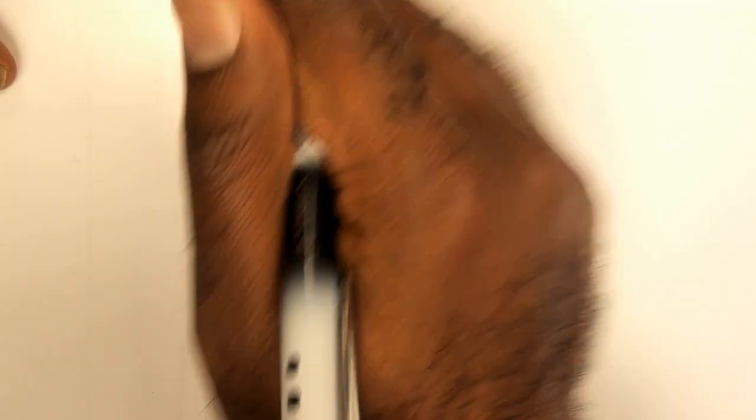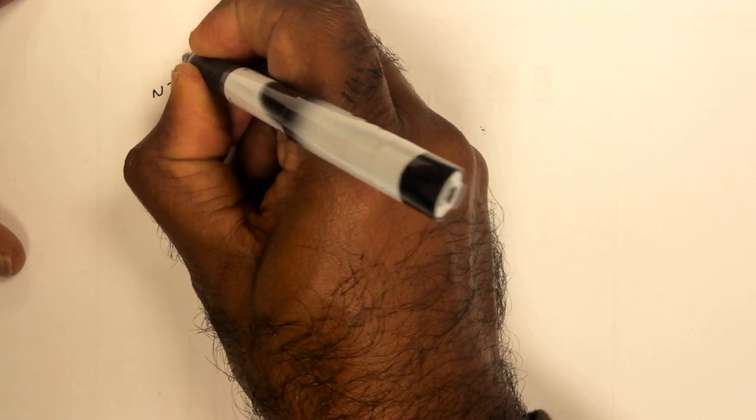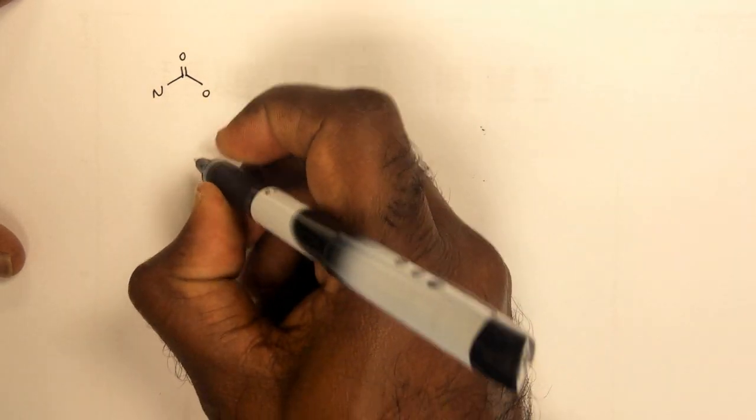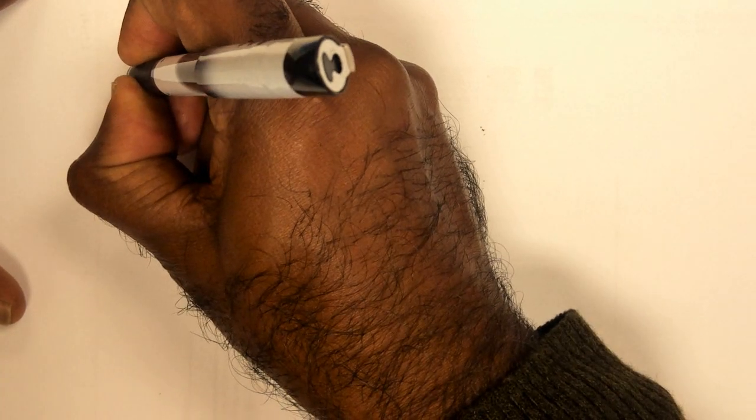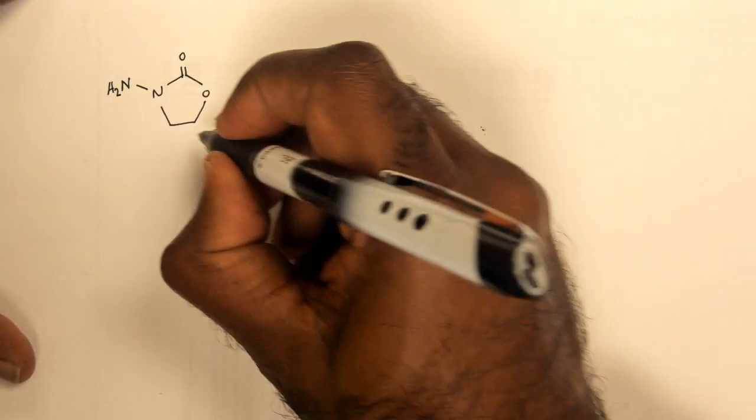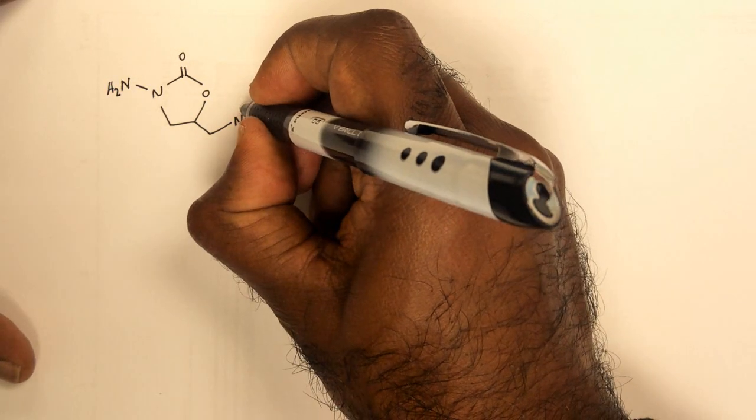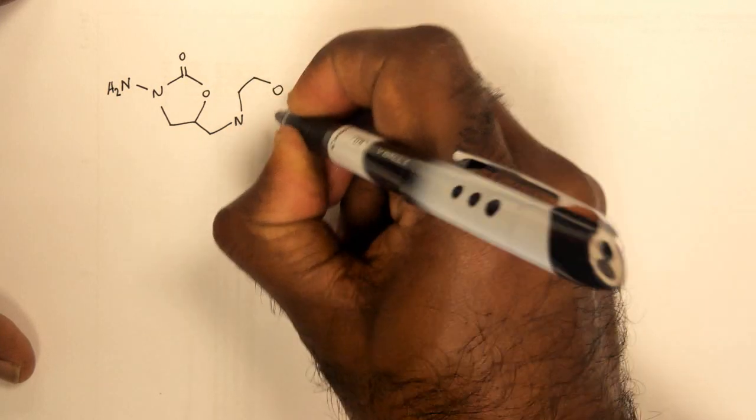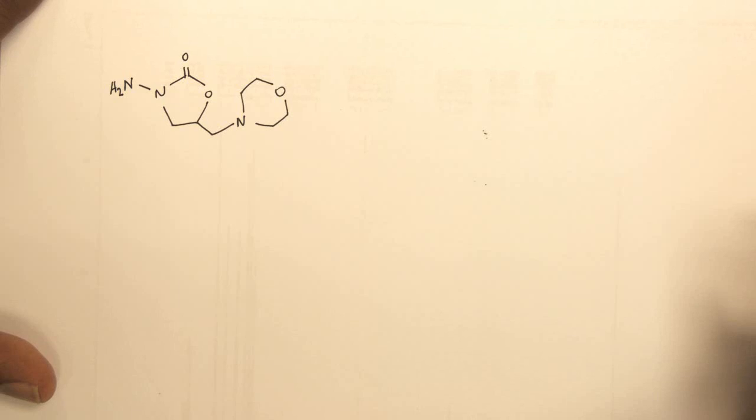The example that we are going to use is this particular structure. Nitrogen joined to a carbonyl group joined to an oxygen in a 5-membered ring. Another amino group joined to that nitrogen atom. And on this particular carbonyl, we have a morpholine group joined to it. So we have that particular structure that we are going to try to do a retrosynthetic analysis on.